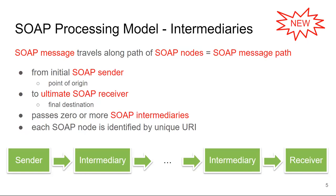In between the sender and ultimate receiver, there will be intermediaries — nodes that can do something to the message being passed along the SOAP message path. The goal is to relay the data from the sender to the receiver, but on the path something can go wrong. Now let's take a look at how SOAP message relaying and processing actually works.